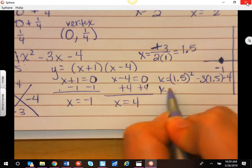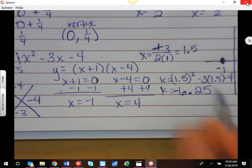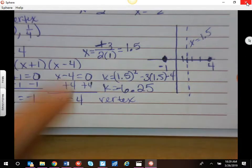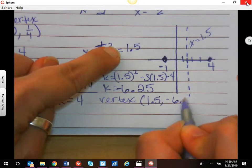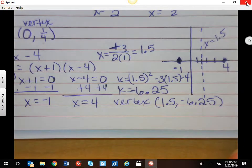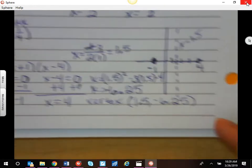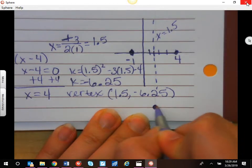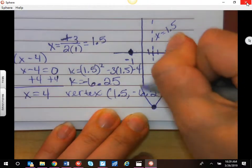So my K is negative 6.25. So my vertex is going to be my 1.5 and negative 6.25, which makes sense. My A was positive on my equation right here, so that means it's going to open up. So I'm going to have a minimum vertex. I don't really have enough space. I'll just guesstimate it down here. And there is our graph.